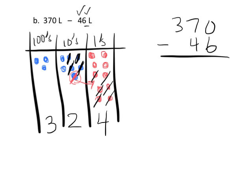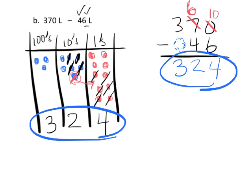Now let's look at the standard algorithm for 370 minus 46. Starting with 0 minus 6—we can't do that without going into negatives, so I take one of the tens, regroup it, giving us 6 tens and 10 ones. That sounds familiar because it's exactly what happened with the number disks. So 10 minus 6 is 4, 6 tens minus 4 tens is 2, and 3 hundreds minus 0 is 3—answer is 324. Don't move to the algorithm until students understand the number disks.